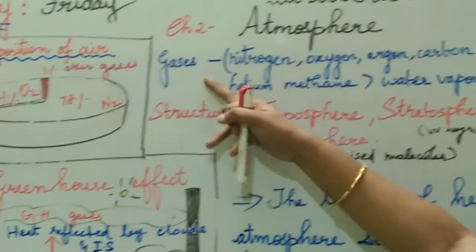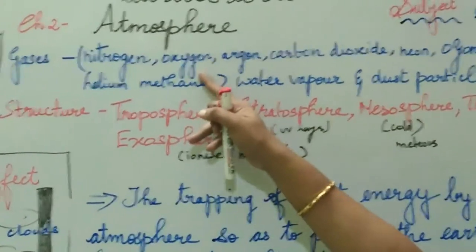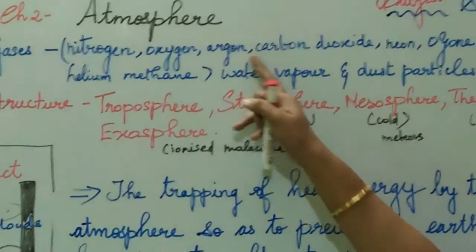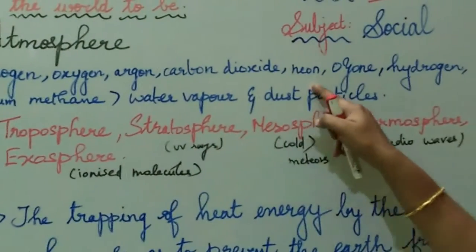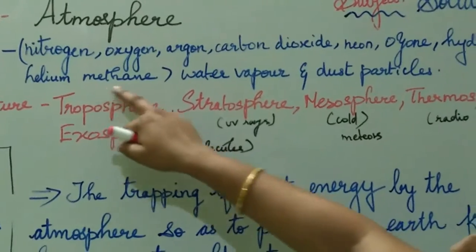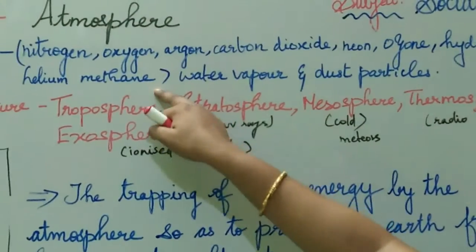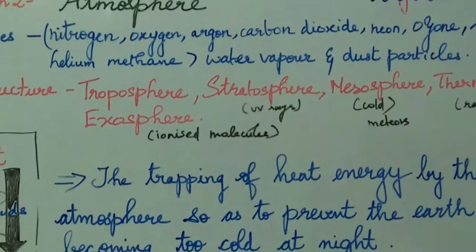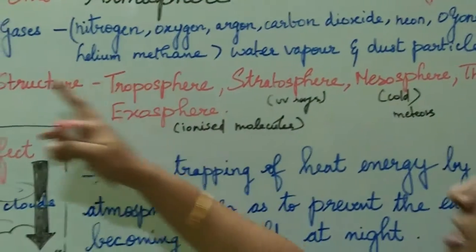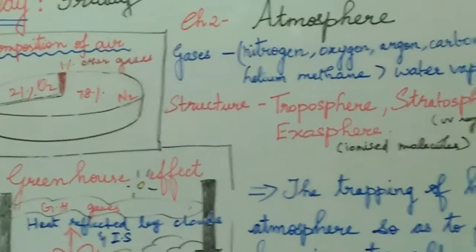The gases in the atmosphere are nitrogen, oxygen, argon, carbon dioxide, neon, ozone, hydrogen, helium, and methane, including water vapor and dust particles. These make up the gases in the atmosphere.